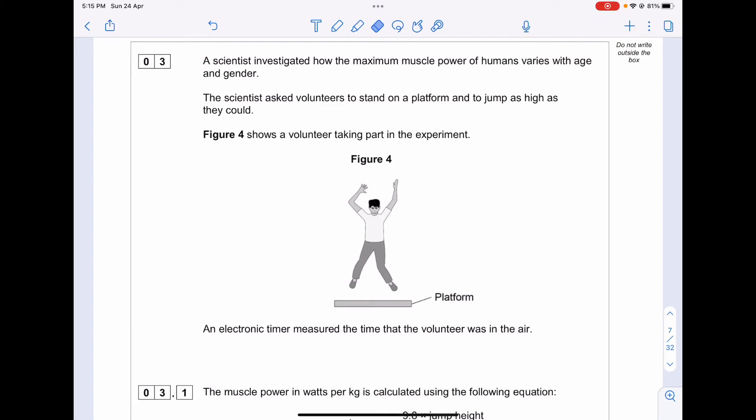Welcome to this physics video. Today we have question 3 from June 2019 AQA papers. A scientist investigated how the maximum muscle power of humans varies with age and gender. The scientist asked volunteers to stand on a platform and jump as high as they could. Figure 4 shows a volunteer taking part in the experiment.